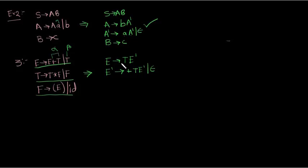This is beta and this is alpha. So E gives beta E dash. E dash gives alpha E dash or epsilon. This production, this production. This production we have eliminated left recursion from this production. Now we will look at this production.